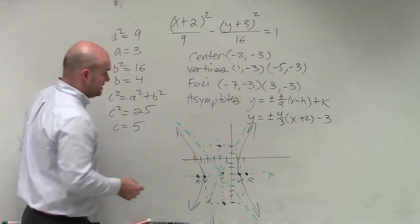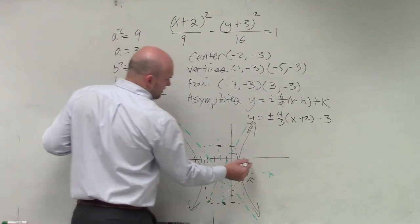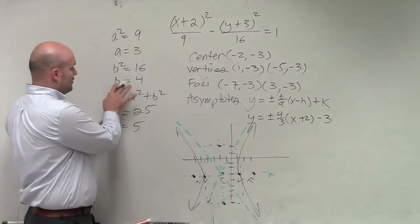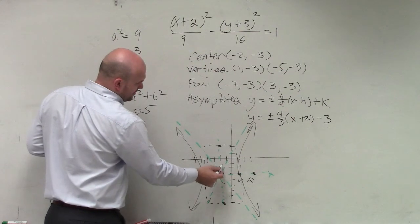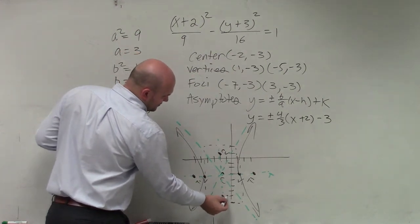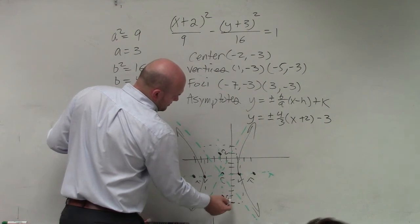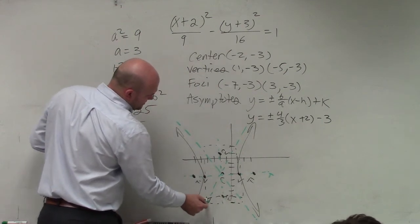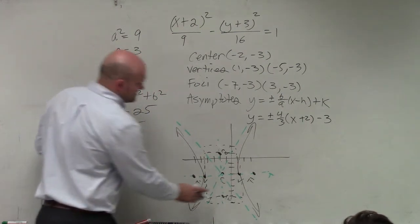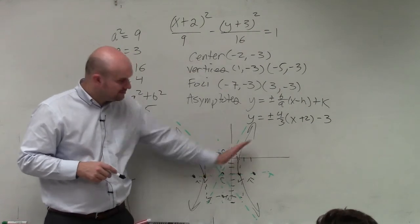Right? Yes, so you're going left and right 5 from here. So I should have gone over one more point, and then over one more point. And therefore, that means my covertices would have been up and down 4. 1, 2, 3, 4. And down 4, so covertices. So that would have been changed a little bit. So I don't think my asymptotes are going to be that far off, but they would be a little bit different, a little bit changed.